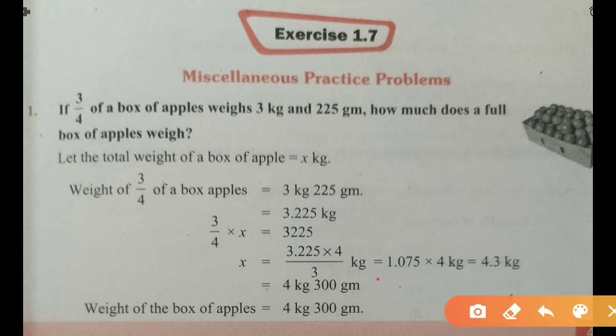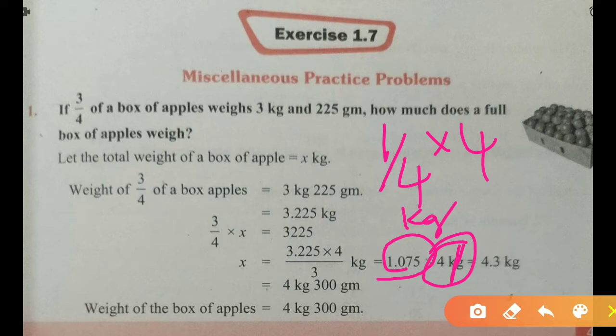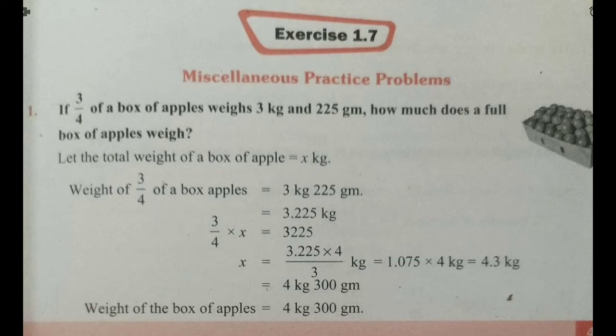After simplification you get 1.075 — that means you multiply 3.225 by 4 and divide by 3 to get 1.075. This is the 1 by 4 of box of apple weight. A full box contains 4 times that, so multiply by 4 to get 4.3 kg. So the total weight of the box of apple is 4 kg 300 g.